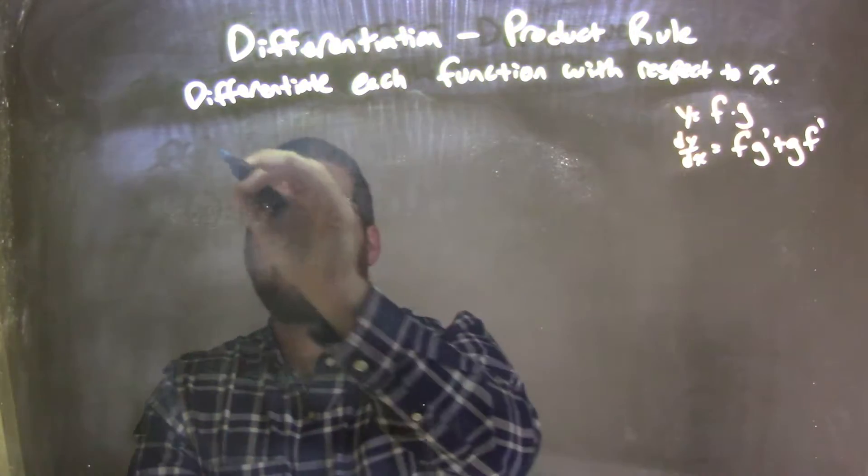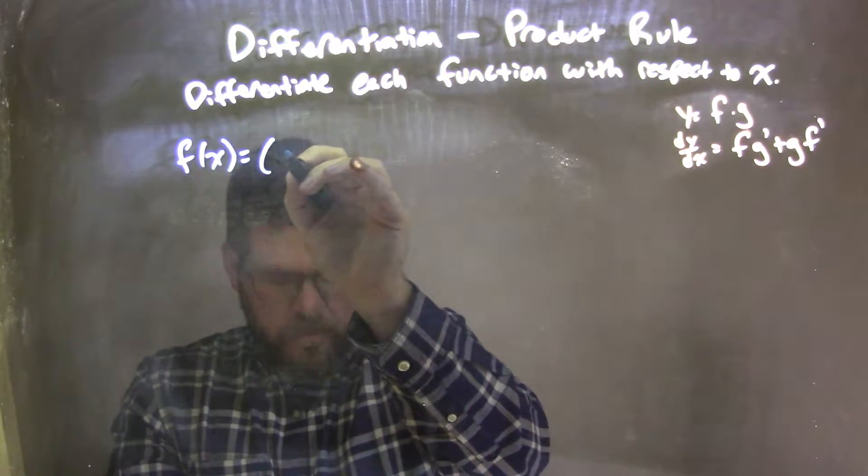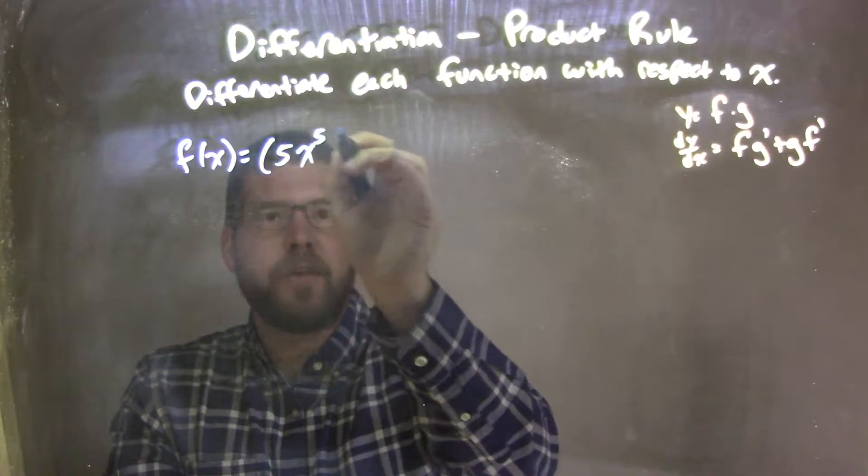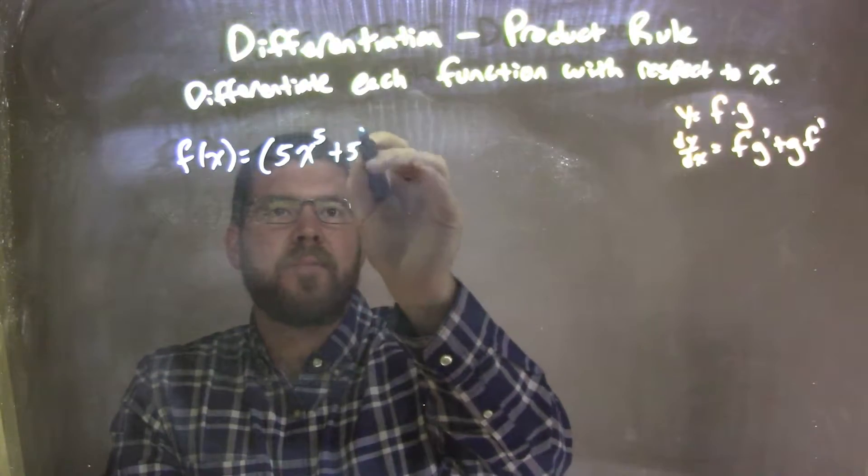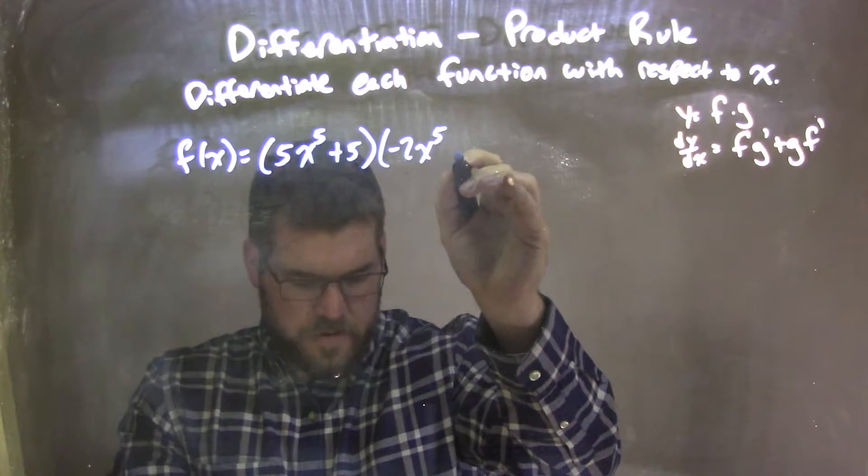So if I was given this function, f of x is equal to 5x to the fifth plus 5 times parentheses negative 2x to the fifth minus 3.